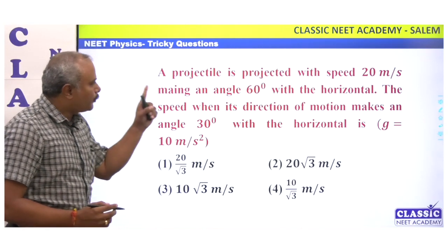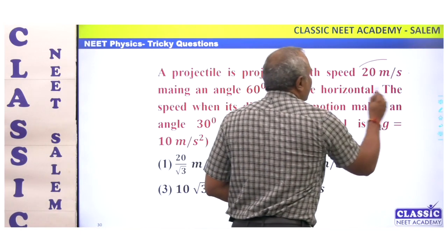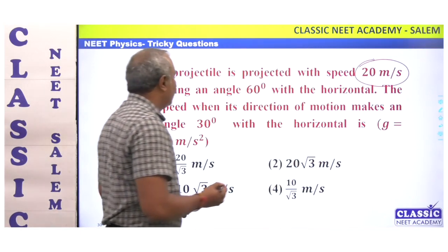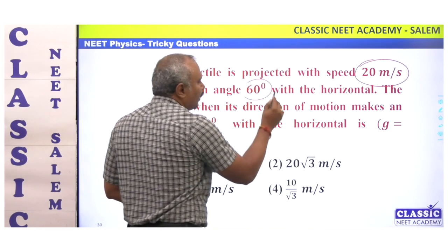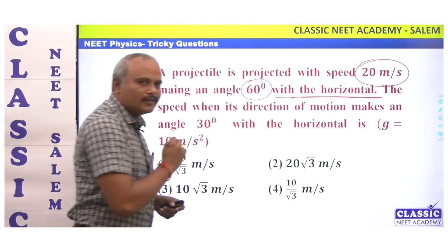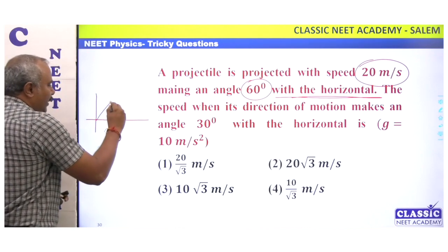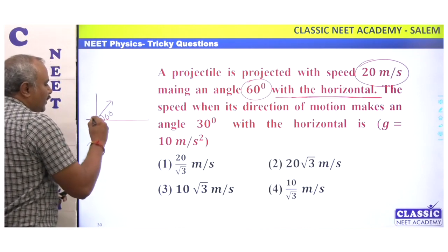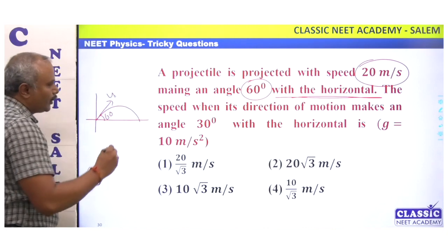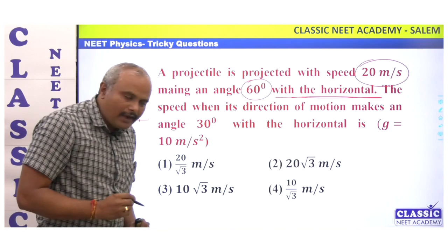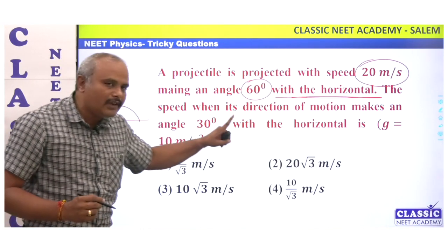If a projectile is projected with a speed of 20 meters per second, making an angle of 60 degrees with the horizontal, find the speed when its direction of motion makes an angle of 30 degrees with the horizontal.